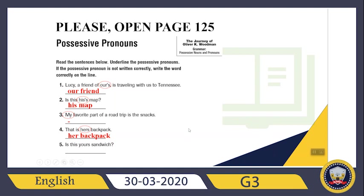Which one is my possessive pronoun? Yours. Good. Do I need to add 's'? No, I don't. So it will be: Is this your sandwich? For possessive pronouns, I don't need to put an apostrophe and then 's'.